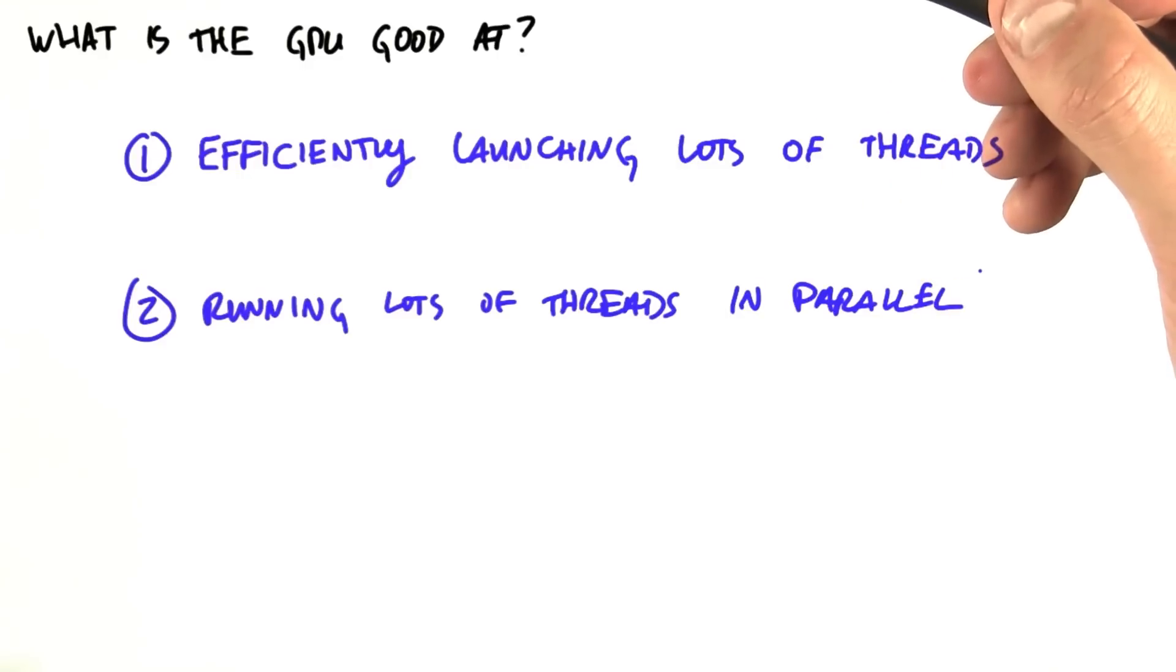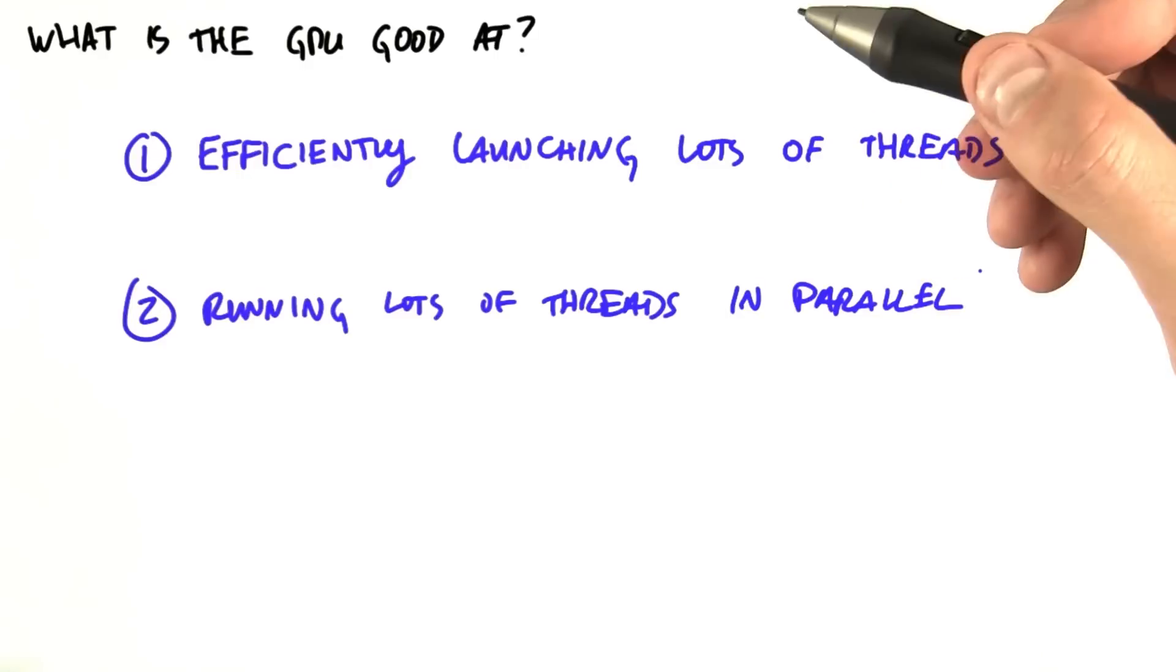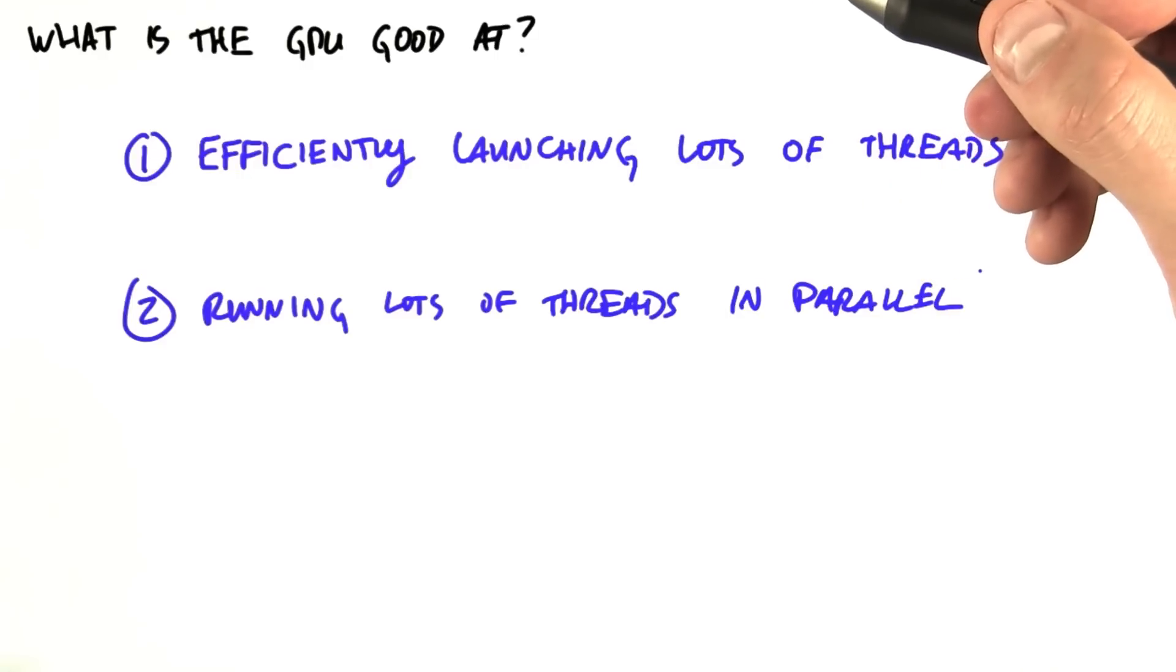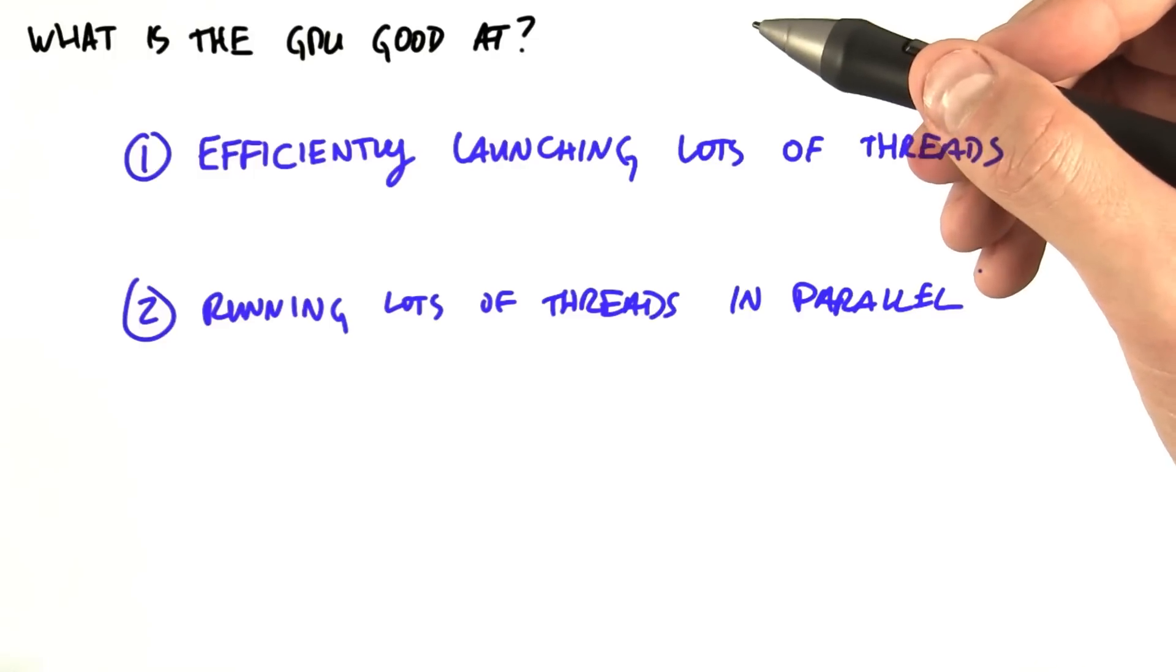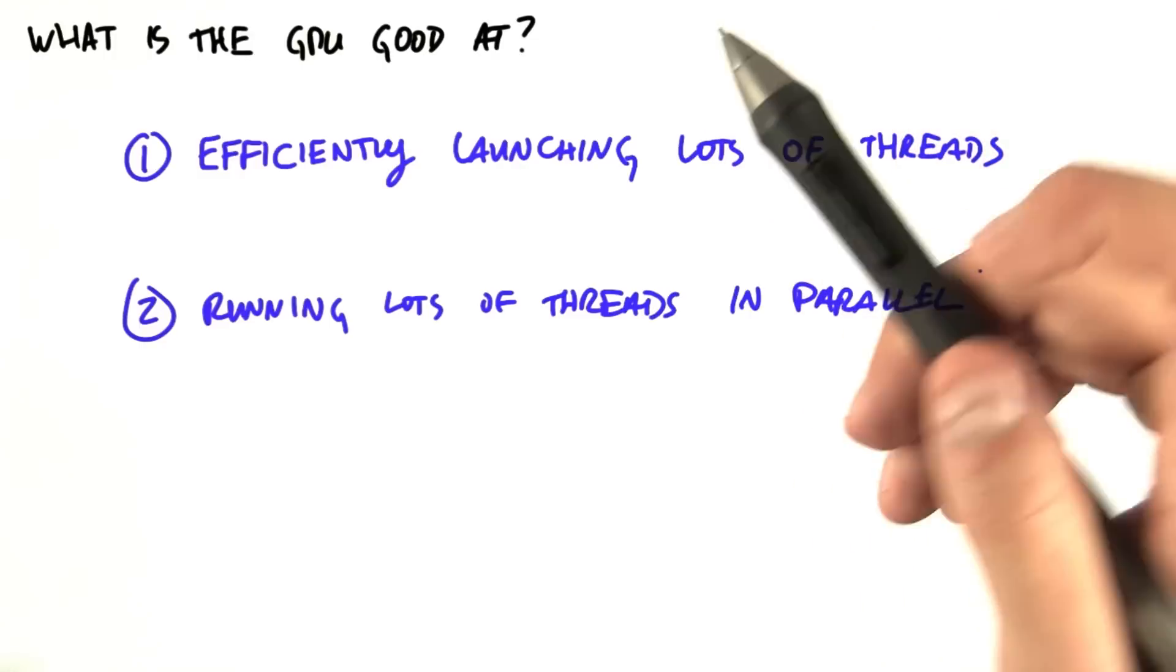So we've presented at a high level what the programming model looks like. Now, what you need to know is, what's the GPU good at? How is it going to be good at running programs I write in this programming model? So what is the GPU good at?